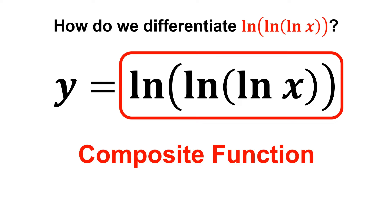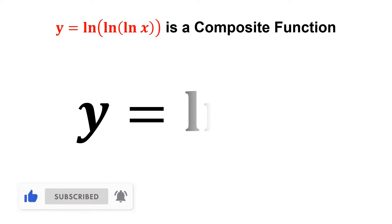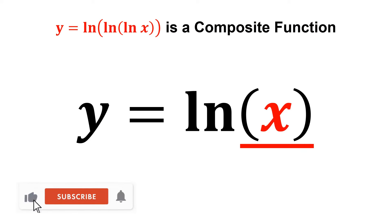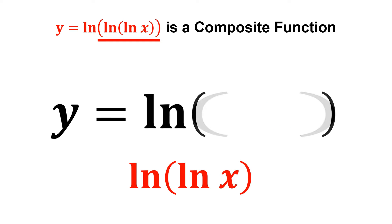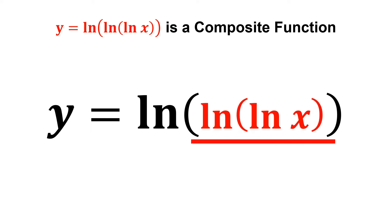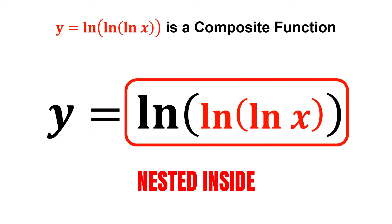I guess most of you must have already known that this is a composite function. In case you do not know about this, let me briefly explain it. Suppose that we have the natural log of x. But you see what we have now for the terms inside the brackets is the natural log of natural log of x, which is nested inside the natural log, and that's the reason it is a composite function.